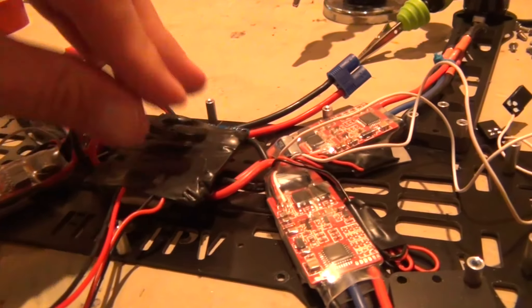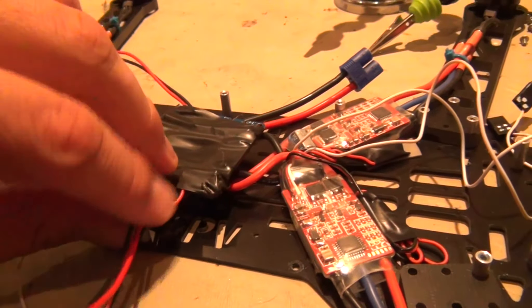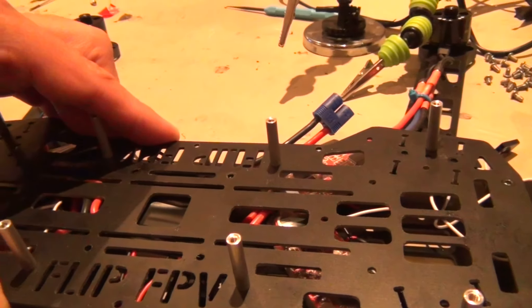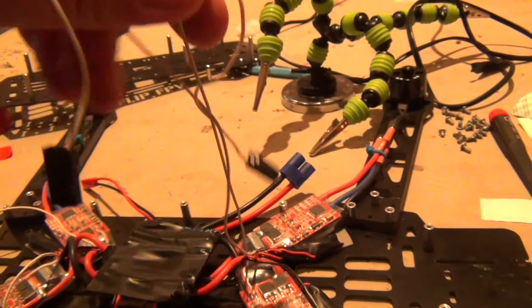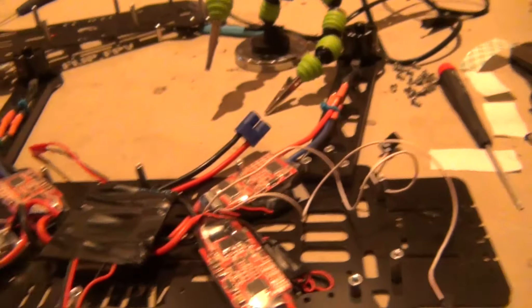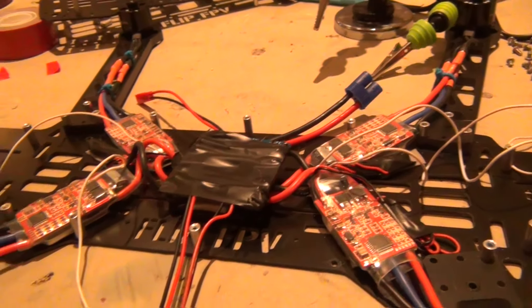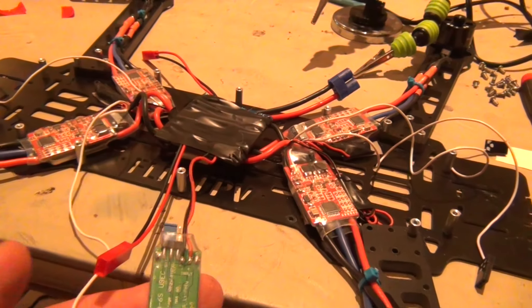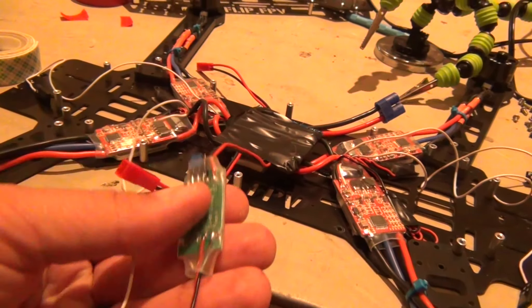I'm going to sandwich the top plate right on here and run my signal leads up through the top tray to my flip board. I've got soldered onto the distribution board the four ESCs and the BEC.